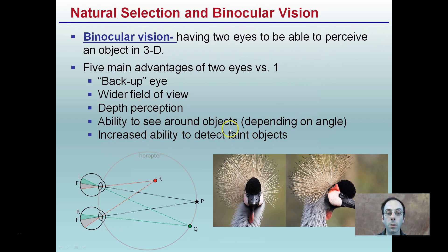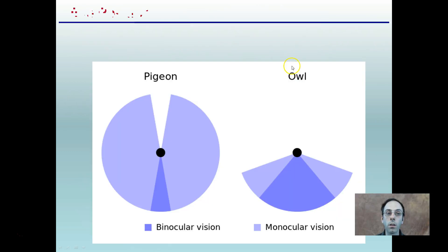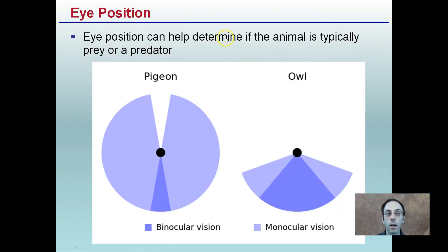The ability to see around objects — think of this as a superpower. If something is blocking one of your eyes and you look through the other eye, you can sometimes see around an obstruction. Wider field of view and depth perception are also very important. Eye position can help determine if an animal is typically a prey or a predator, and this can influence its ability to avoid one or find the other.